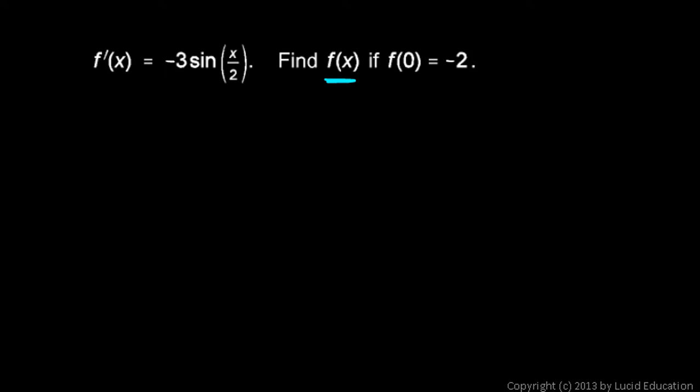We're trying to find f given the derivative of f, so let's take the antiderivative of this function here. So f of x is going to be the antiderivative of a negative sine function. Well, what function has the negative sine function as its derivative? That would be the cosine function. So let's write cosine x over 2.